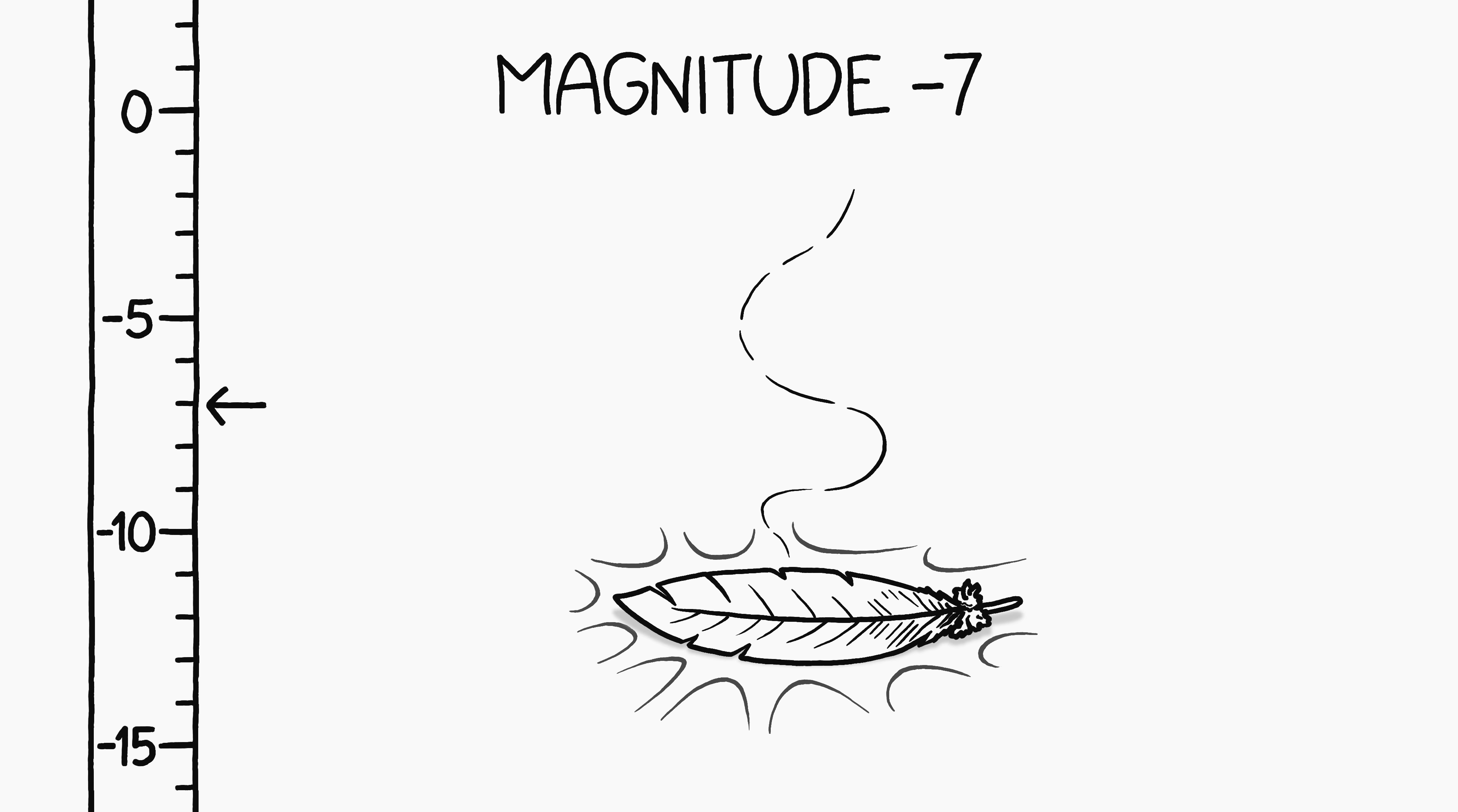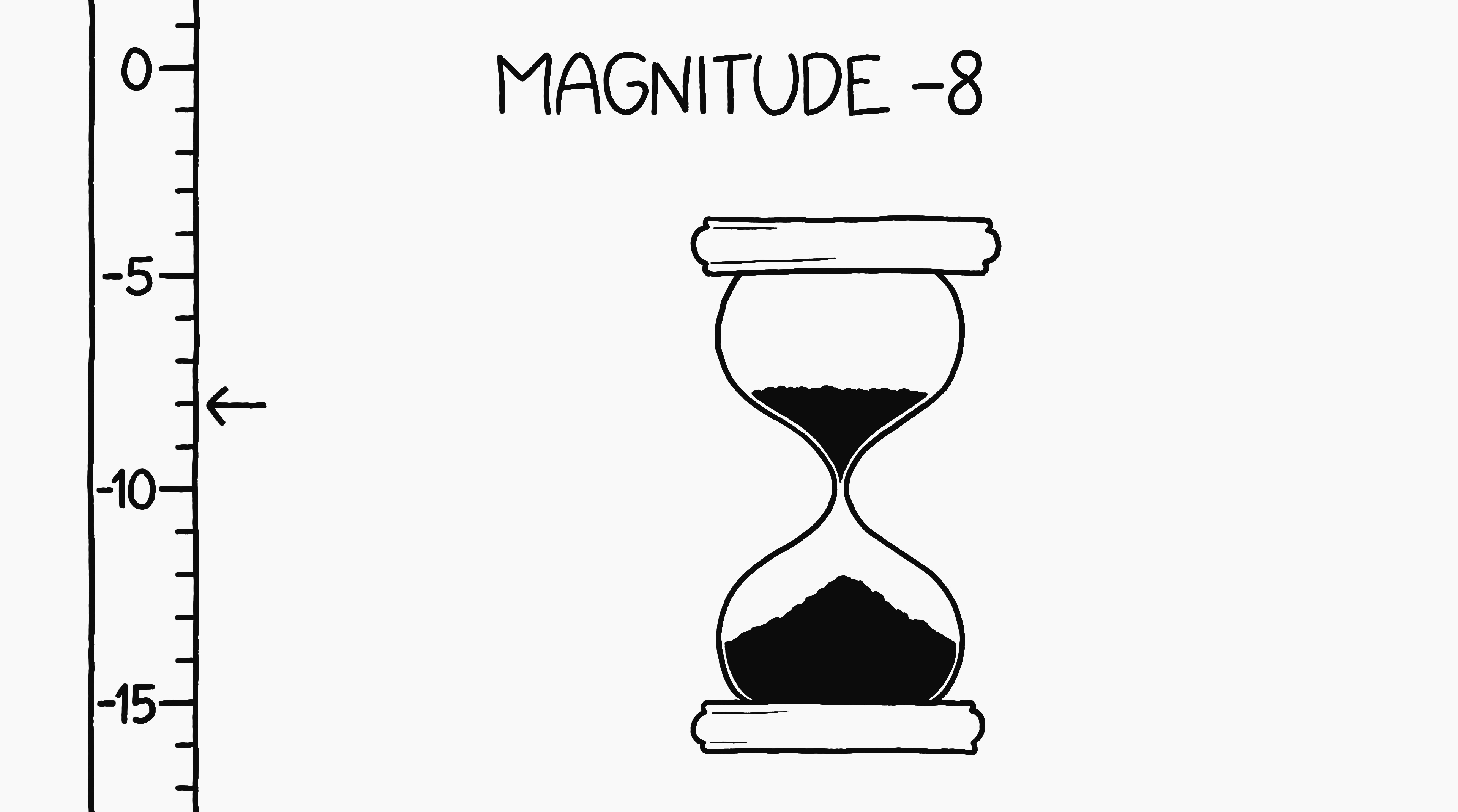Negative 6 is a key press on a lightweight keyboard. Negative 7 is a single feather fluttering to the ground. A fine grain of sand falling onto the pile at the bottom of a tiny hourglass would be a magnitude negative 8 quake.